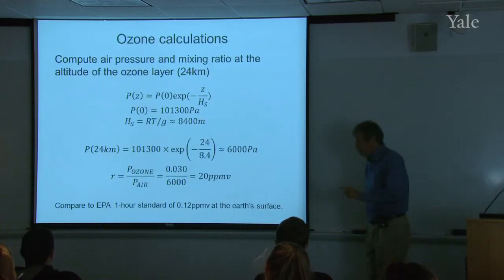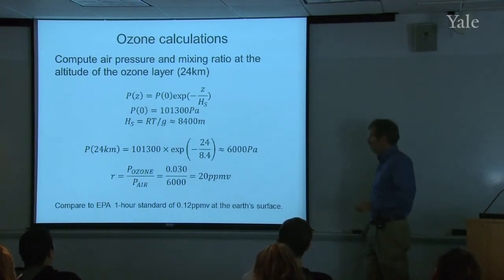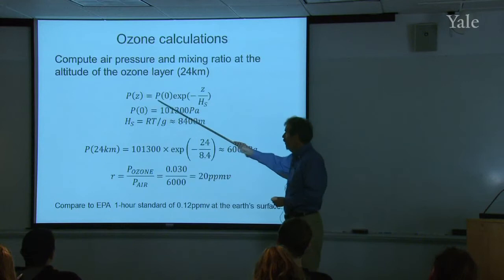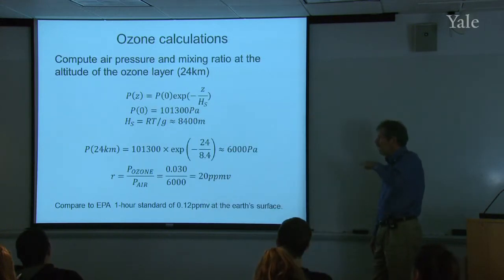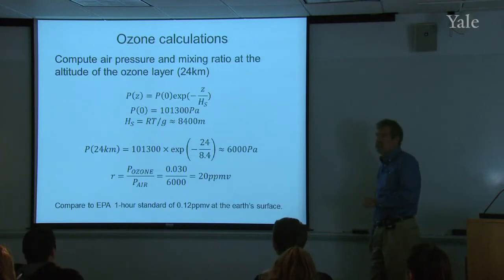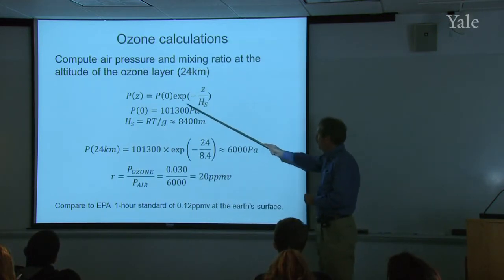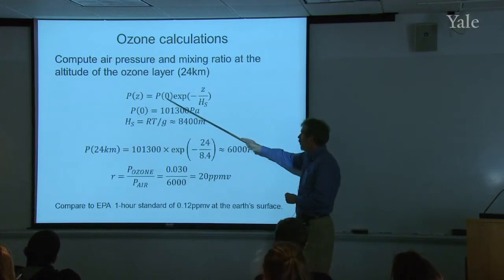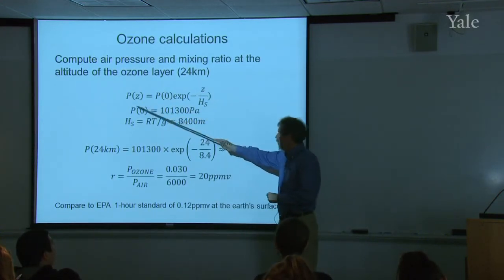Because it's going to be a mixing ratio, you need to know how much air is up there as well — not just how much ozone, but how much air. I'm going to use the simple approximate exponential form for pressure as a function of altitude, using scale height H_s. You know the pressure at the surface and the altitude you're inquiring about, and this gives you the pressure at that altitude.